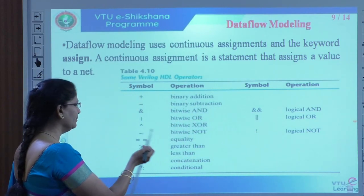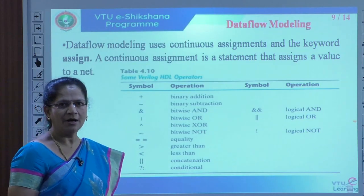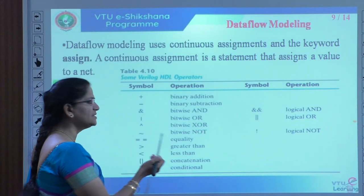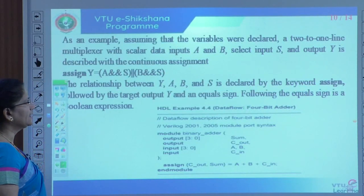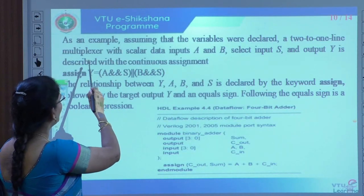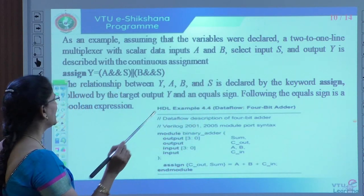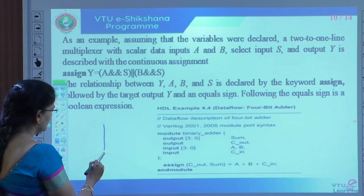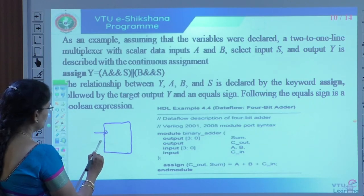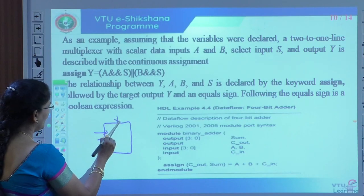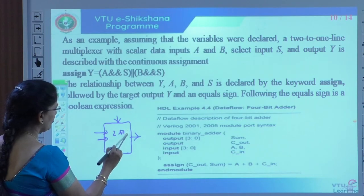These operators were used earlier in the HDL Module 1. Now, we will learn some that were not used: concatenation and conditional. These are not used in Module 1. We will see how to use these operators in data flow modeling. We will see how it exactly executes, taking a 2-to-1 MUX example.